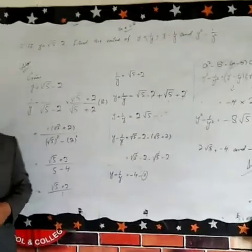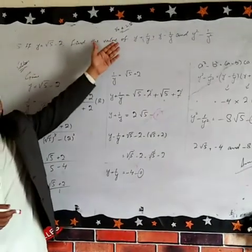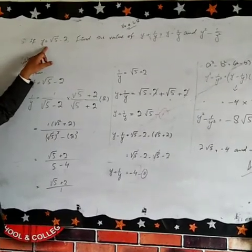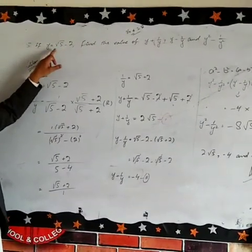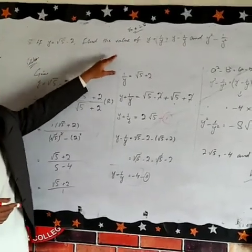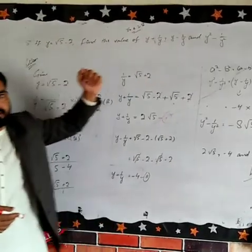In today's class we are going to discuss part number 5 of exercise number 2.8 in which we have the value of Y, that is √5 - 2, and we have to find the value of Y + 1/Y and Y - 1/Y.